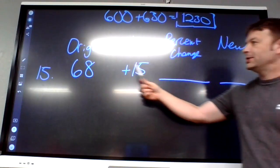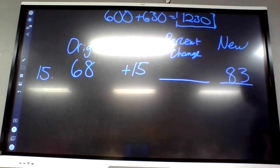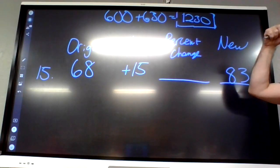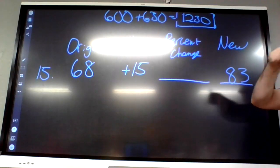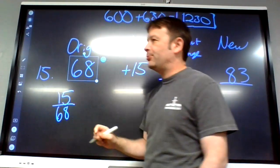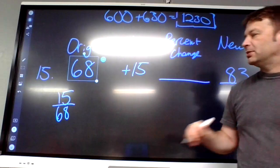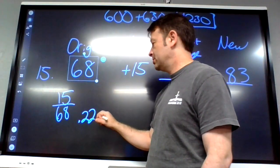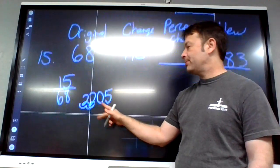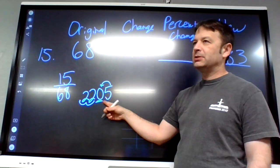Start with the easy one: original is 68, changing by going up 15. What's the new amount? Just add them — 83. For percent change, use the formula: change divided by original, which is 15 divided by 68. The directions say round to the nearest tenth of a percent. That gives 0.2205, so as a percent it's 22.1 percent.